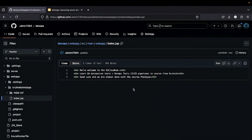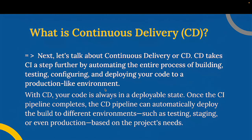From this step you can also use Git or GitHub Actions in your project. So next, let's talk about continuous delivery, or CD. CD takes CI a step further by automating the entire process of building, testing, configuring, and deploying your code to a production-like environment. With CD, your code is always in a deployable state. Once the CI pipeline completes, the CD pipeline can automatically deploy the build to different environments such as testing, staging, or even production based on the project's needs.